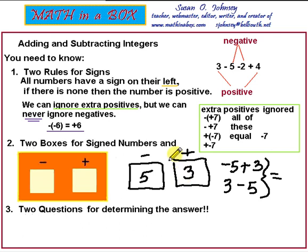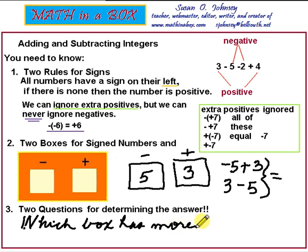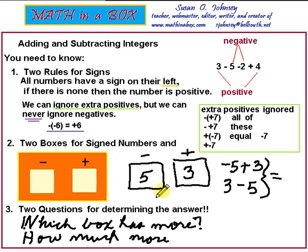Now let's do the two questions for determining the answer. The first question is: which box has more? You must say either the positive box or the negative box — don't say 5 or 3. The second question is: how much more? The negative box has more. How much more does it have than the positive box? It has 2 more. So the answer is negative 2. Negative 5 plus 3, or 3 minus 5, is equal to negative 2.